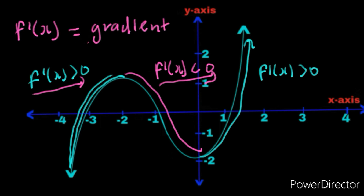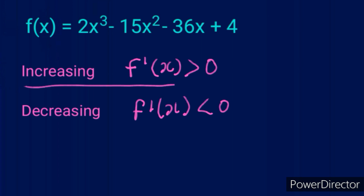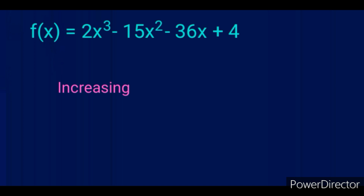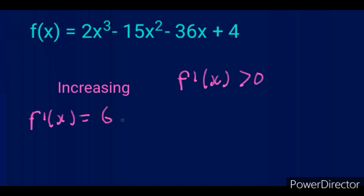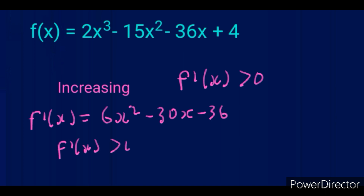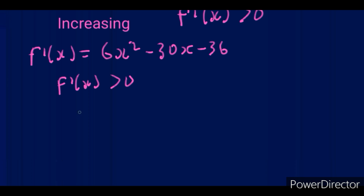The first derivative is our gradient. So if the graph is increasing, the first derivative is positive. Whenever the graph is decreasing, the first derivative is negative. So if they say for which values of x is f increasing, we know the first derivative must be positive — greater than zero. So let's find the first derivative: f'(x) = 6x² − 30x − 36. This is the first derivative, and we tell them the first derivative is greater than zero. We get a mark for that.